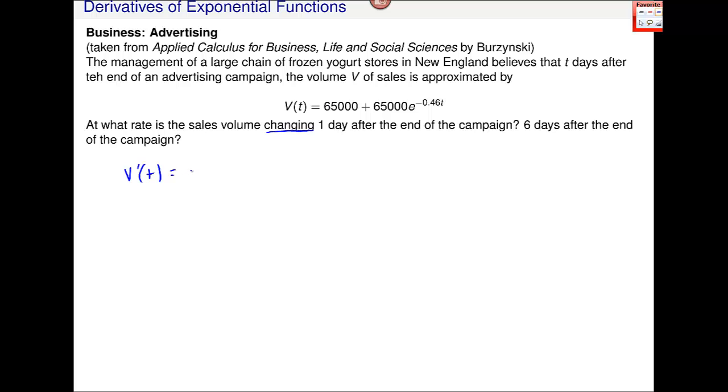65,000 and the derivative is zero. Then I get 65,000e^(-0.46t) times the derivative of the inside, which is 0.46. Let me now combine these two terms and multiply those together. I get -29,900e^(-0.46t) for the derivative.